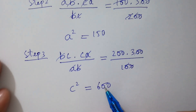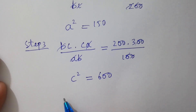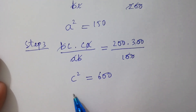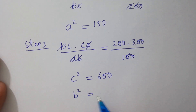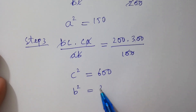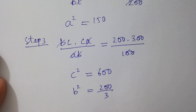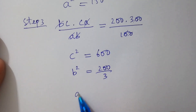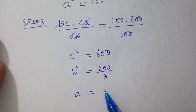So we have a squared equals 150, b squared equals 200 over 3, and c squared equals 600.